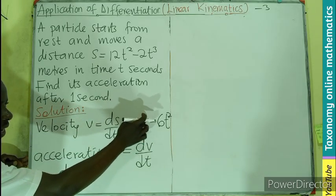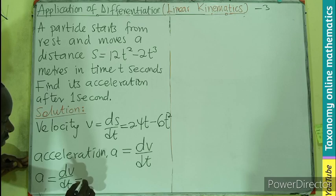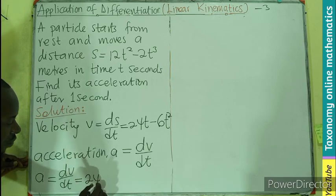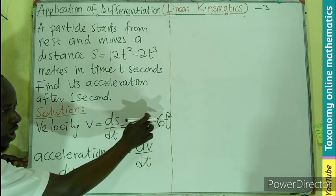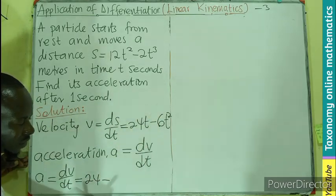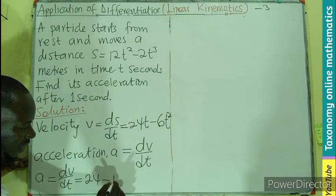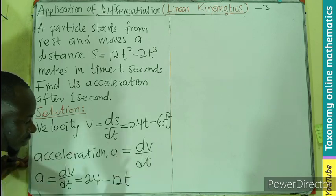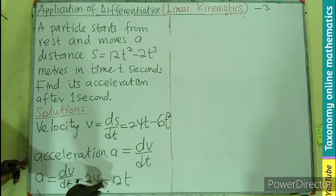T has a power of 1, come forward to multiply 24 to give us 24. T exponent 1 minus 1, that is 0, so T is going. Minus 2 come forward, multiplying 6, give you 12 times the T. So this is the acceleration.